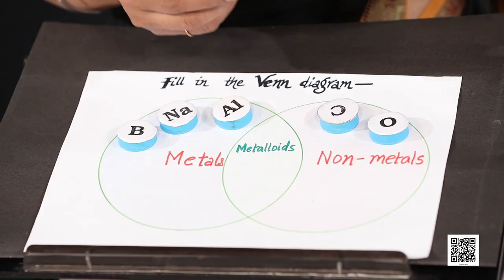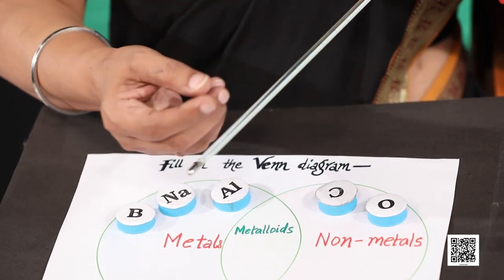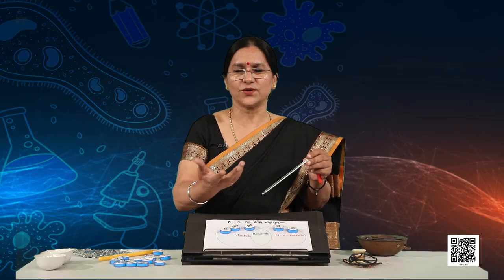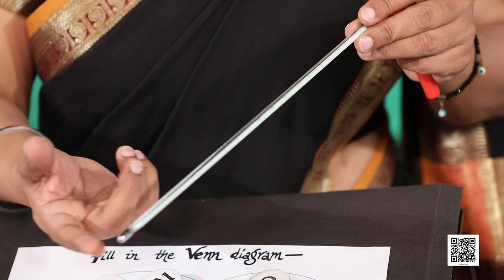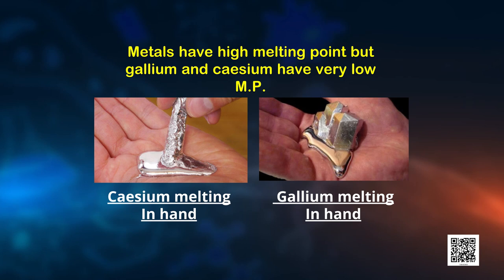Remember, elements cannot be grouped on the basis of physical properties alone, as there are many exceptions. The first exception: all metals exist as solids at room temperature except one — mercury. You must have seen that in a thermometer, mercury goes up and down, expanding and contracting with change in temperature. Metals generally have high melting points, but gallium and cesium have very low melting points — these two metals melt if you keep them on your palm.